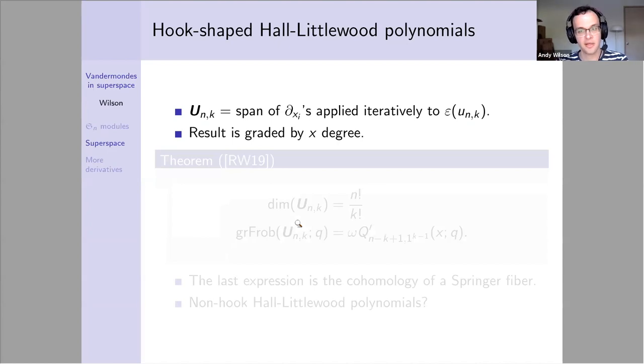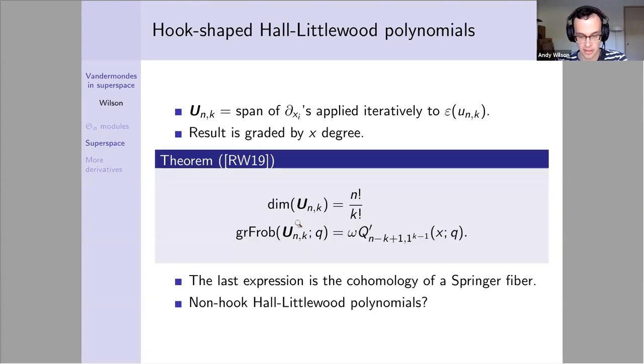Once we've done this, we can take the x derivatives, just x derivatives for now. The result is graded by x degree. Our first theorem is that we get familiar objects: our dimension is this nice quotient of factorials, and the graded Frobenius is a certain Macdonald polynomial. Only the hook-shaped types actually appear here. This can also be thought of as cohomology of a Springer fiber. It's not clear if we can get the non-hook Macdonald polynomials through this process. The hook-shaped ones are the only ones that appear in such a nice way.